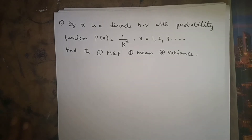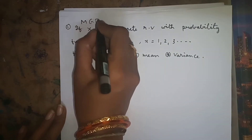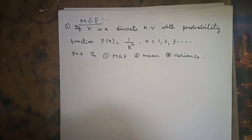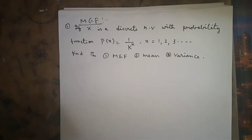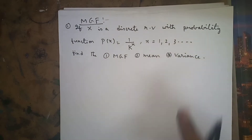Hello everyone. Today I am going to explain MGF — moment generating function — problems for the continuous case and discrete case. First we will do a few problems in the discrete case and then go to the continuous case. The first problem: if x is a discrete random variable with probability function p(x) = 1/k^x, for x = 1, 2, 3, and so on, find the MGF, mean, and variance.